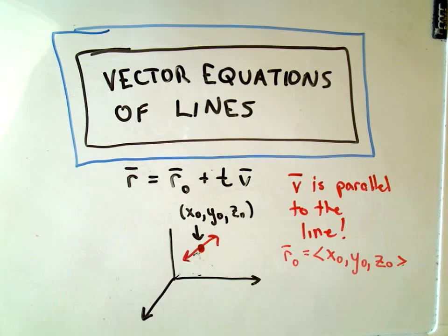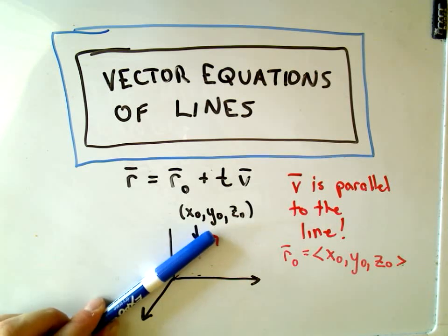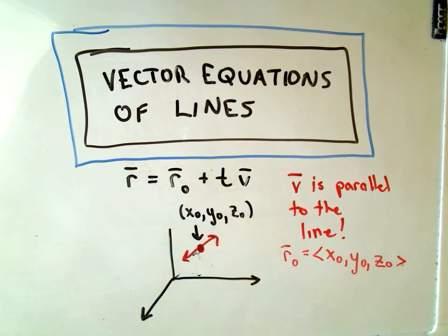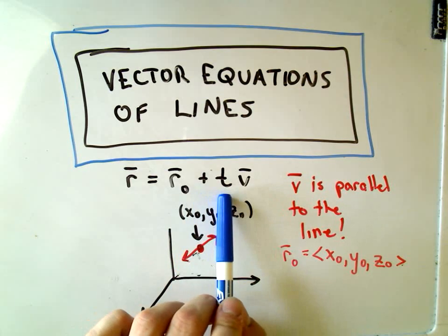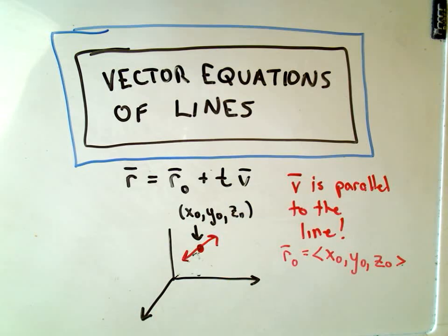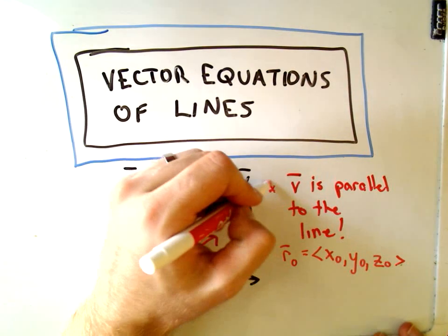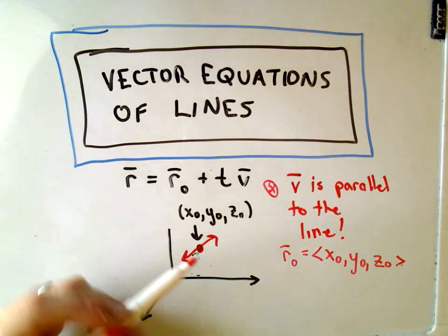The idea, the formula is: the vector r, if it goes through the point (x₀, y₀, z₀) and we want the equation of the line with some given direction, the formula for that is we use r₀ plus t times some vector v. Two things here: the idea is v is parallel to the line.